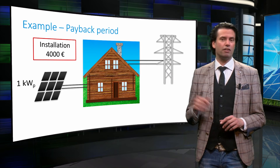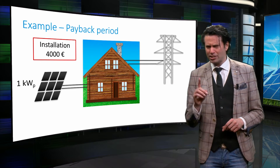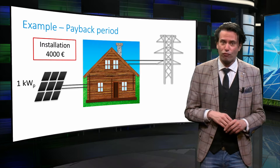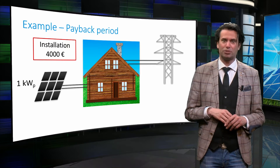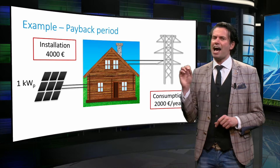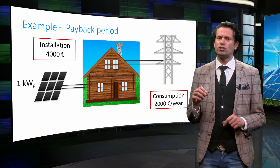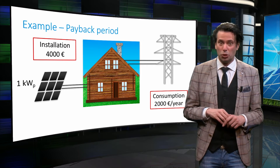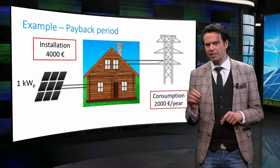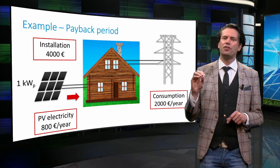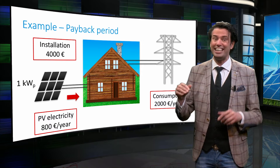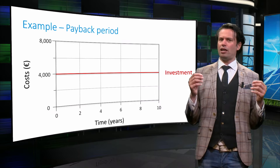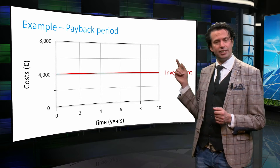Let's look at the Smith family, for instance, who has installed a 1 kW peak PV system at an initial investment cost of €4,000. The family's average electricity consumption is such that they receive an annual electricity bill of €2,000. After installation of the PV system, roughly €800 worth of electricity is generated by the PV system each year. We can illustrate this situation in this graph.